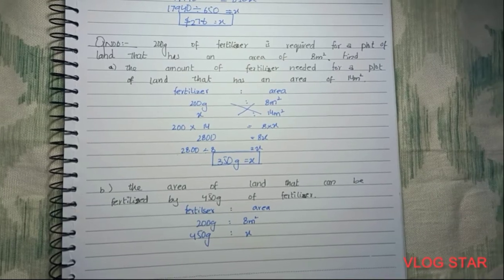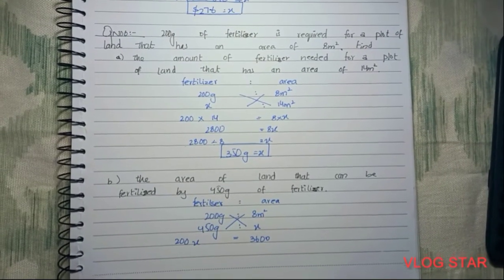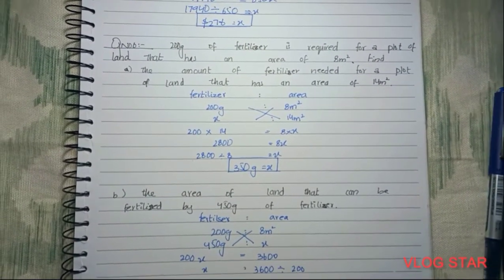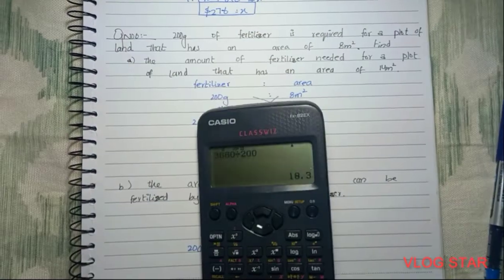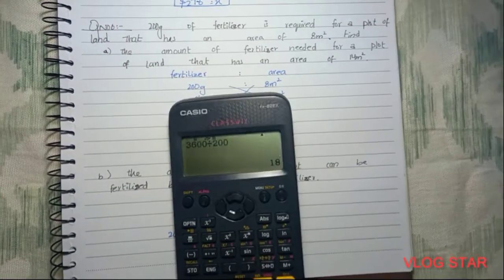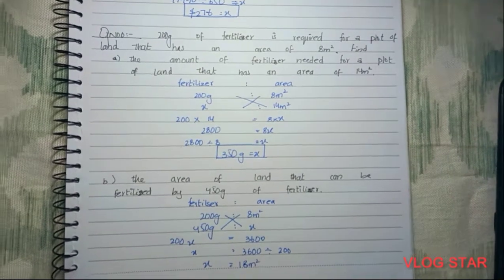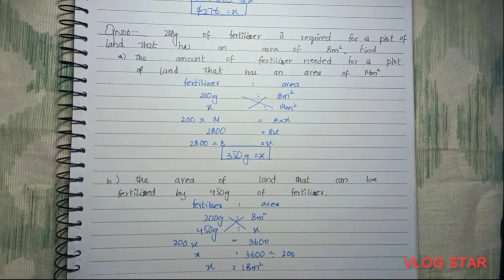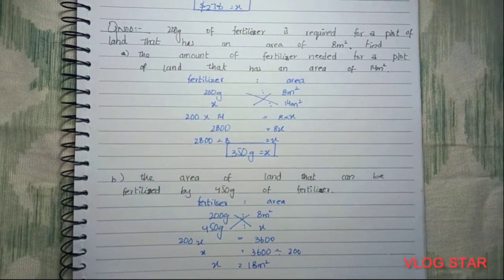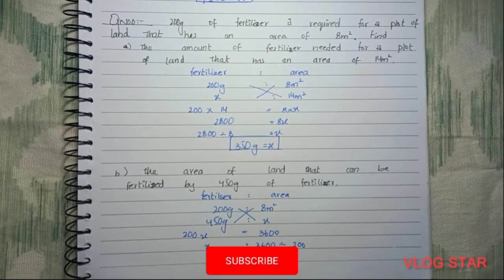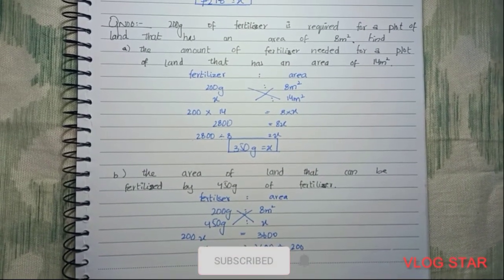We cross multiply. The result means 450 grams of fertilizer is required for a plot of land that has an area of 18 meters squared.